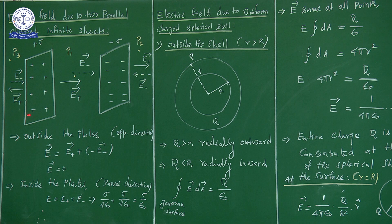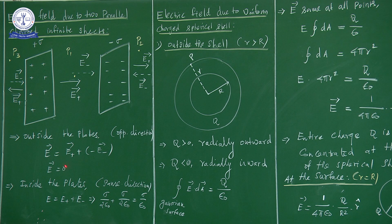Outside the plate, we consider the electric field is zero. Inside the plate, the electric field is sigma by epsilon. Next is the fourth application: electric field due to a uniformly charged spherical shell.